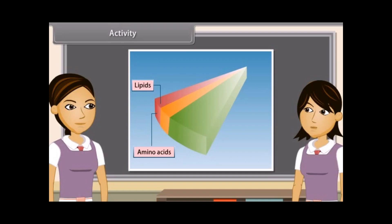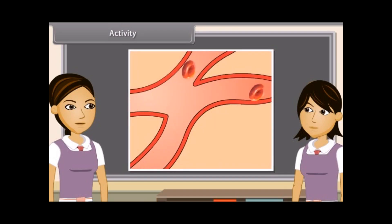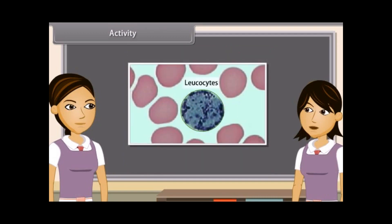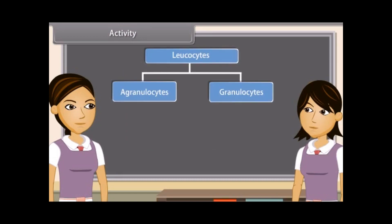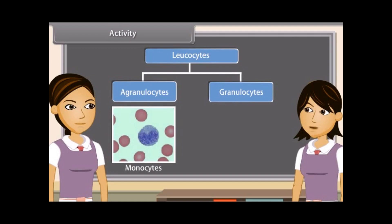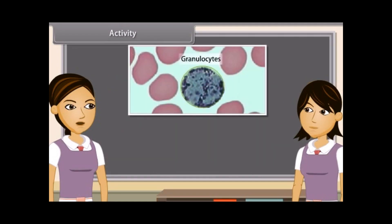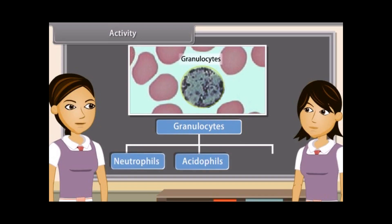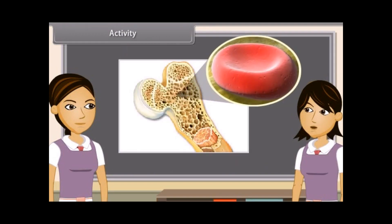Plasma also contains vitamins, enzymes, hormones, and waste materials like urea and uric acid. Human red blood cells are circular, biconcave and denucleated and more in number. They have iron-containing conjugated protein called hemoglobin, due to which they are red in color. Leucocytes are amoeboid, nucleated and whitish; they are larger in size but less in number. They are of two types: agranulocytes, without granules and non-lobed nucleus, which include monocytes and lymphocytes; and granulocytes, containing cytoplasmic granules and lobed nucleus, which are of three types: neutrophils, acidophils and basophils. Blood platelets are minute, enucleated, fragile fragments of giant bone marrow cells called megakaryocytes.